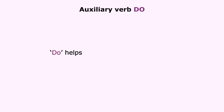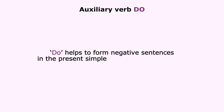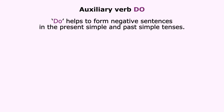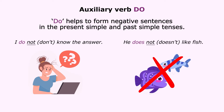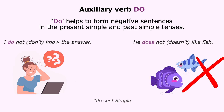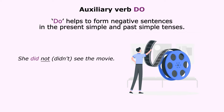Do helps to form negative sentences in the present simple and past simple tenses. For example: 'I do not (don't) know the answer'; 'He does not (doesn't) like fish' (present simple); 'She did not (didn't) see the movie' (past simple).